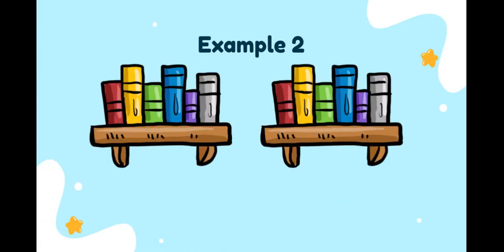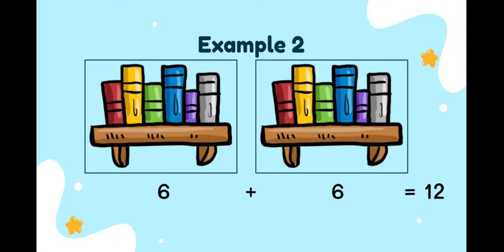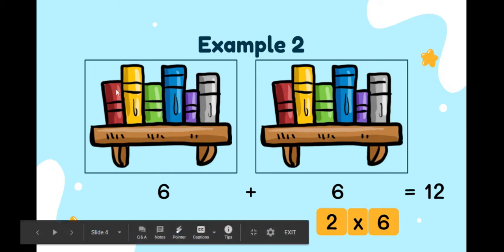Example number two. These are books. Let's count how many books all together. Six plus six is equal to twelve. Let's make the multiplication sentence. Count the group first: one, two. So we write two. Times six. Why six? Because each group has six books — these are six and these are six. Is equal to twelve. This is the multiplication sentence.